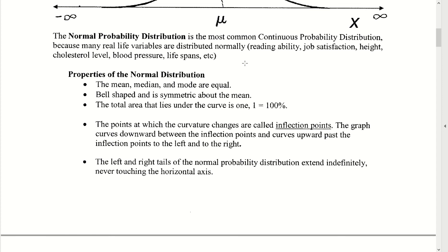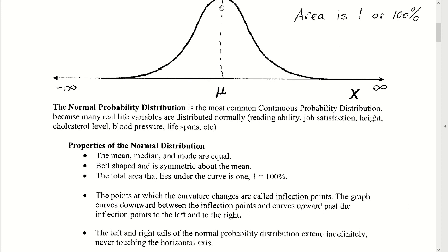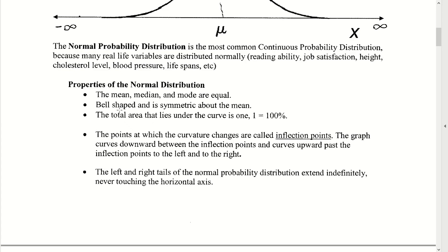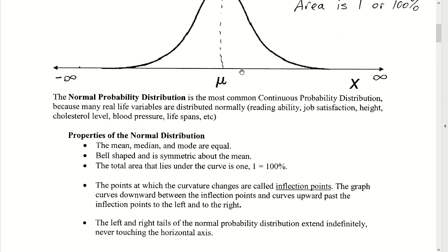A couple of key properties of the normal distribution: the mean, median, and mode are all equal to each other. They occur wherever the highest point of the bell is — that value on your independent axis is the mean. It's going to be symmetric with respect to the mean, meaning that if you draw a vertical line through the mean, it will cut the bell-shaped curve into two equal pieces that are mirror images of each other.